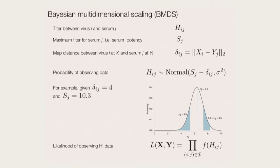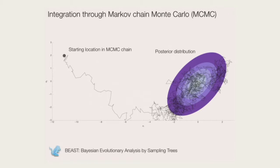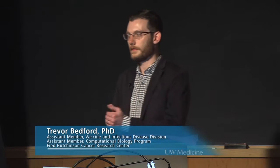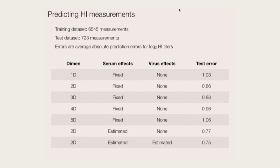This is all a likelihood model — you can have a probability of observing HI data and fit this model. We fit this model through Markov chain Monte Carlo, where you start with some random parameters and let the algorithm tune itself to discover what parameters are actually realistic. This is publicly available and implemented in the software package BEAST. In terms of dimensionality, I showed that if I take 90% of my data and try to predict titers in the remaining 10%, two dimensions actually works better than three, four, or five dimensions — with three or more you get overfitting.